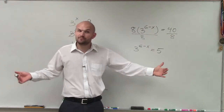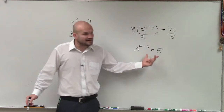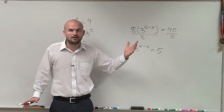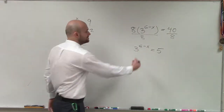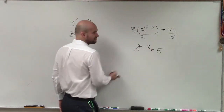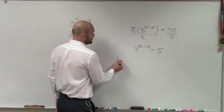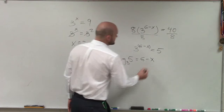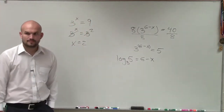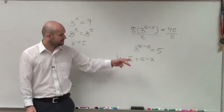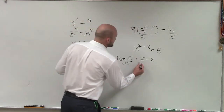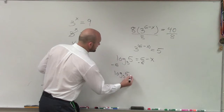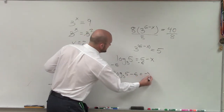So what we can do — there are two different methods. This is an exponential equation. We can rewrite all exponential equations in logarithmic form. If I did that, it would be log base 3 of 5 equals 6 minus x. So then to solve for x, I would subtract 6, giving me log base 3 of 5 minus 6 equals negative x.